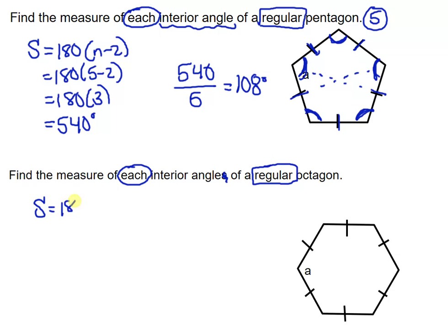Let's do S equals 180 N minus 2, and first we just have to find what all of the interior angles add up to. So we did 180 times 6, and we got 1080.